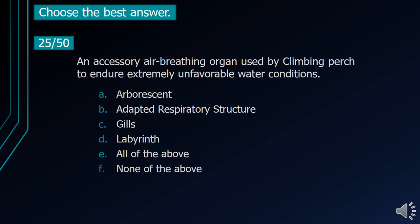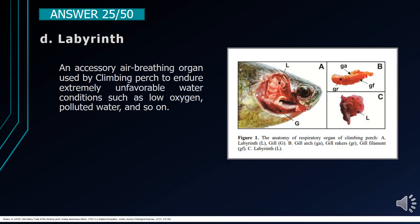Number 25. An accessory air-breathing organ used by climbing perch to endure extremely unfavorable water conditions. A. Arborescent. B. Adapted respiratory structure. C. Gills. D. Labyrinth. E. All of the above. F. None of the above. The correct answer is letter D, Labyrinth. It is an accessory air-breathing organ used by climbing perch to endure extremely unfavorable water conditions such as low oxygen and polluted water.